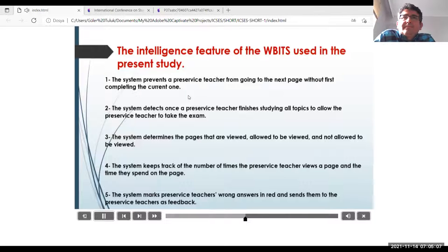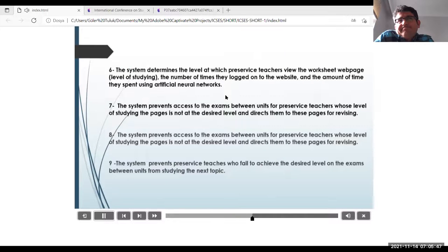1. The system prevents a preservice teacher from going to the next page without first completing the current one. 2. The system detects once a preservice teacher finishes studying all topics to allow the preservice teacher to take the exam. 3. The system determines the pages that are viewed, allowed to be viewed, and not allowed to be viewed. 4. The system keeps track of the number of times the preservice teacher views a page and the time they spend on the page. 5. The system marks preservice teachers' wrong answers in red and sends them to the preservice teachers as feedback. 6. The system determines the level at which preservice teachers view the worksheet web page, level of studying, the number of times they logged onto the website, and the amount of time they spend using artificial neural networks.